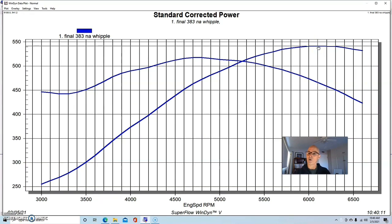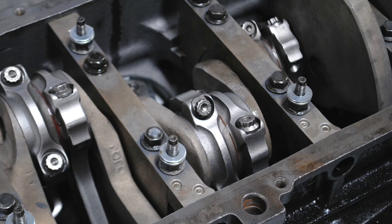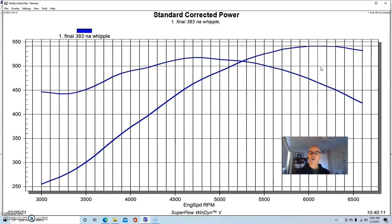We ran this thing naturally aspirated to begin with to establish a baseline before adding boost with either combination. We put together a healthy 383 because the more power you make NA, the more power you will be able to make at any given boost level. We wanted to start out with a healthy NA motor before adding the Whipple supercharger. We built a 383 stroker with forged rods, forged pistons, and a forged crank.